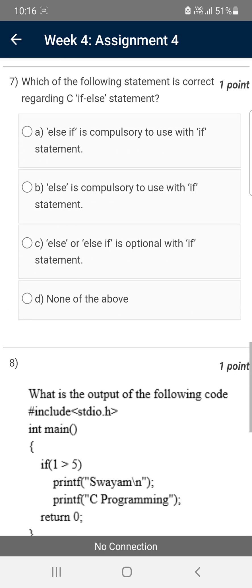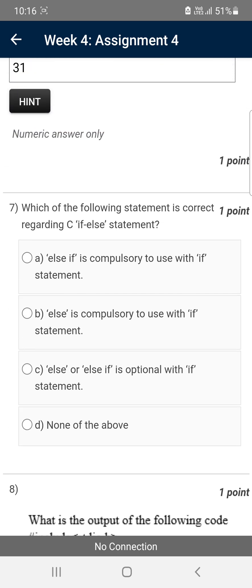Moving on to the seventh question: which of the following statement is correct regarding C if-else statements? The answer is option C: else or else-if is optional with if statement. There's no need to use else-if or else every time with if, because if the statement in the if block is correct, it will execute, otherwise it returns nothing. So there's no compulsory need to use else-if or else in every program or situation.